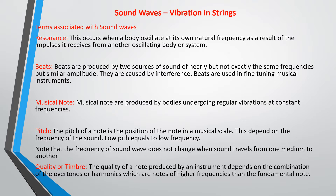Overtones or harmonics are notes of higher frequency than the fundamental note. The fundamental note is the lowest frequency that a musical instrument can produce — whether it's a string of a guitar, a closed pipe, or an open pipe. Overtones and harmonics are notes of higher frequencies. As we go along, we are going to see how to derive equations for the different harmonics or overtones in a stretched string.